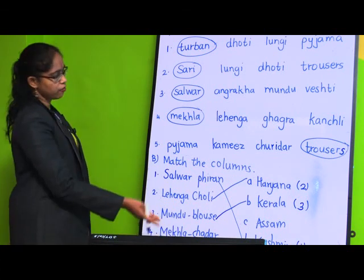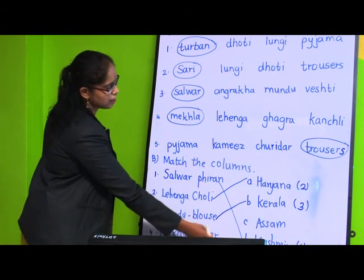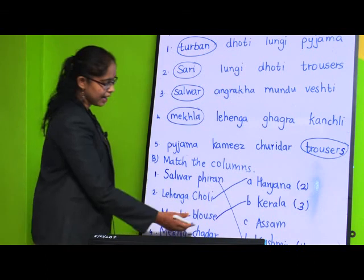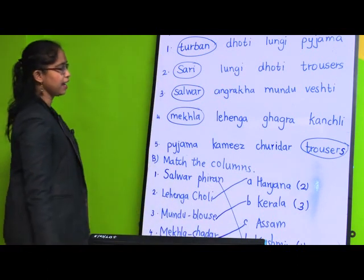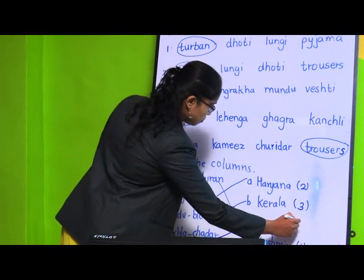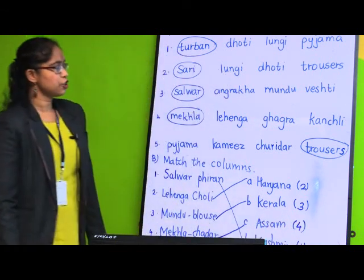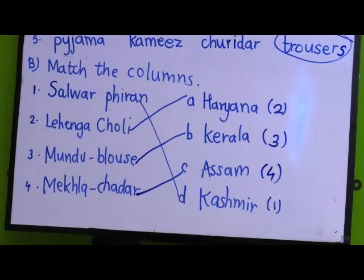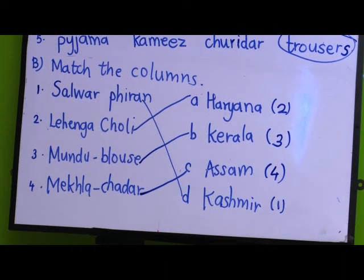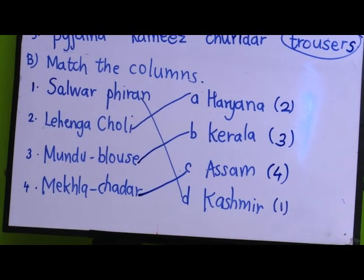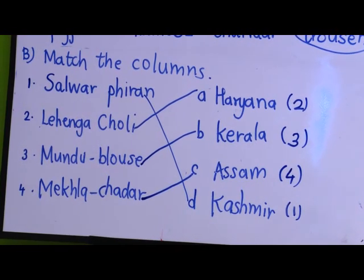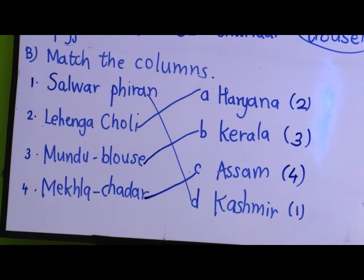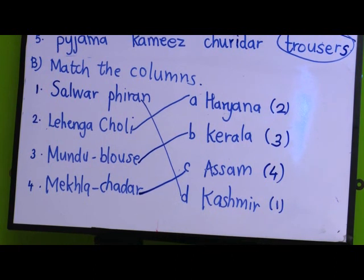Mekhla and chadar - you can easily know the answer since we've solved the other three. Mekhla and chadar are worn in Assam. Write number 4. So: salwar firang - Kashmir, lehenga choli - Haryana, mundu blouse - Kerala, mekhla chadar - Assam.